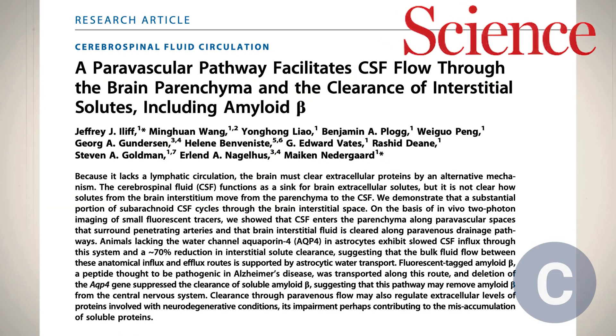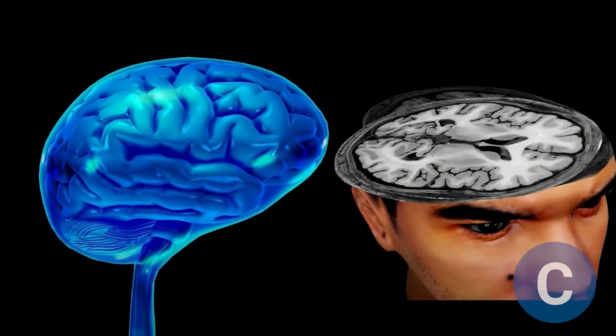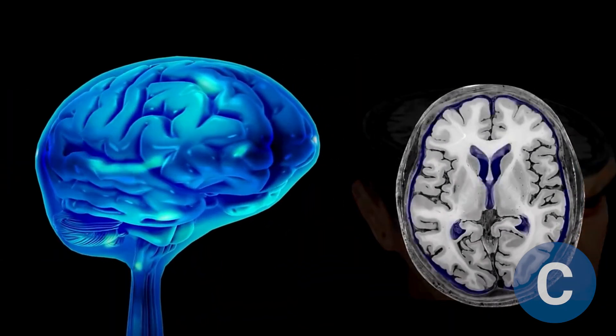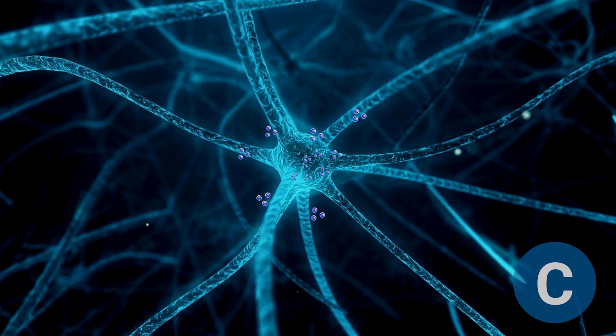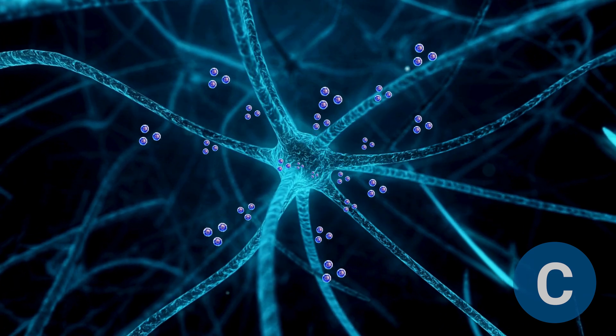Today, I would like to introduce an article published in Science in 2012. This study introduces the hypothesis of a system called the glymphatic pathway, which describes the mechanisms by which the brain eliminates its metabolic waste.